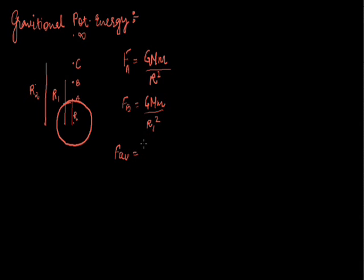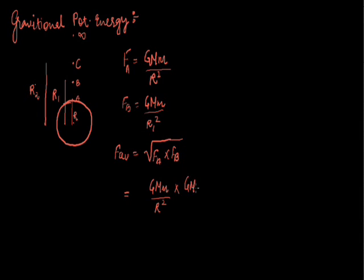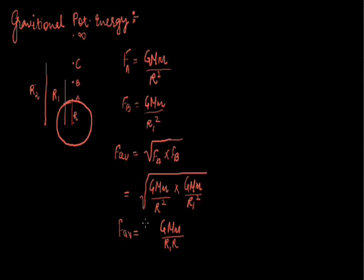The geometric mean of any two numbers a and b is the square root of ab. So if I am considering the geometric mean of any two forces, it will be root over Fₐ times F_b. Substituting the values, I get GMm divided by r squared, multiplied by GMm divided by r₁ squared. Solving this, we get GMm divided by r₁·r. This is the average force acting on the particle.